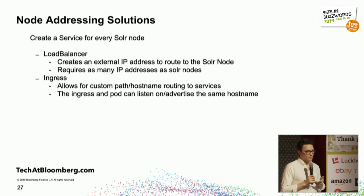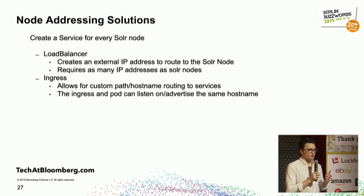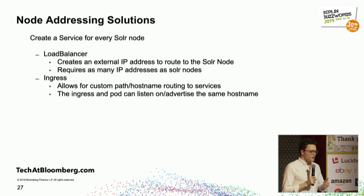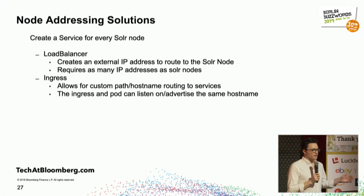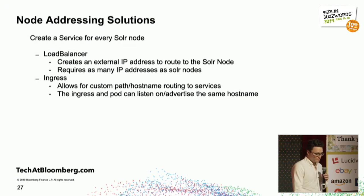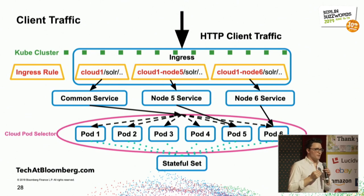The solution — unfortunately — is to create a separate service for every Solr node. Once you have a separate service for every Solr node, there are two ways to make it addressable from outside: create a load balancer within that service, which gives an IP address mapping to just that individual Solr node, or create an ingress for more complex routing by path and hostname to that Solr pod through a common IP address. At Bloomberg, we prefer the ingress solution because we don't want to spin up thousands of IP addresses — we run thousands of Solr nodes.